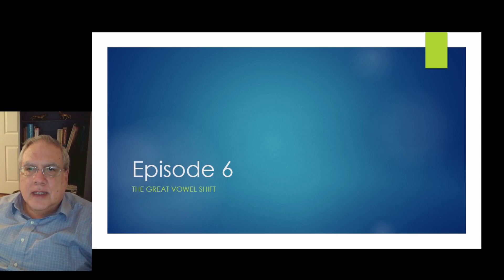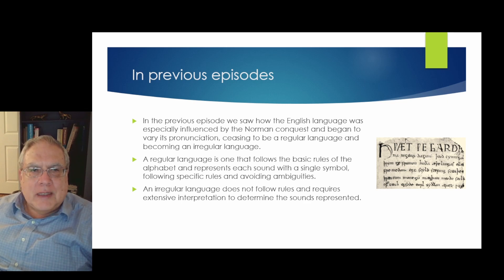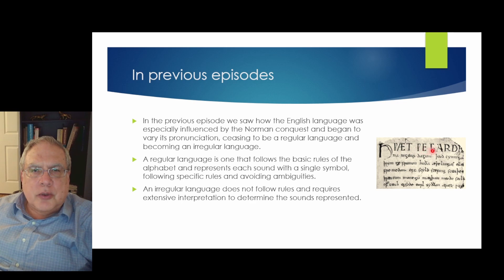Welcome to episode 6 of Enigmas of the English Alphabet. In previous episodes we discussed how the English language was especially influenced by the Norman conquest and began to vary its pronunciation, ceasing to be a regular language and becoming an irregular language. A regular language follows the basic rules of the alphabet, represents each sound with a single symbol, and avoids ambiguities. An irregular language does not follow rules and requires extensive interpretation.